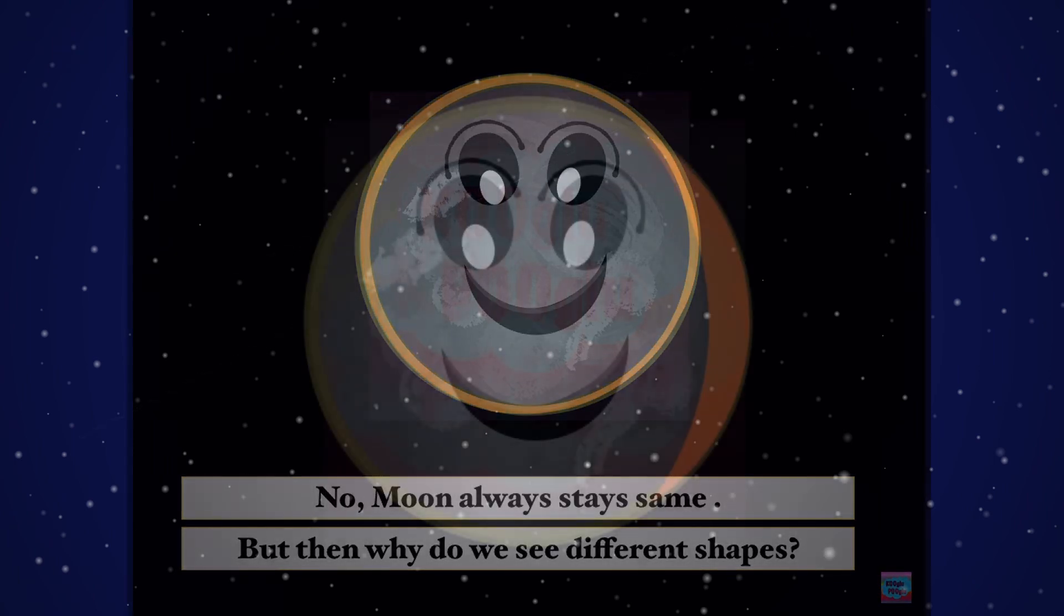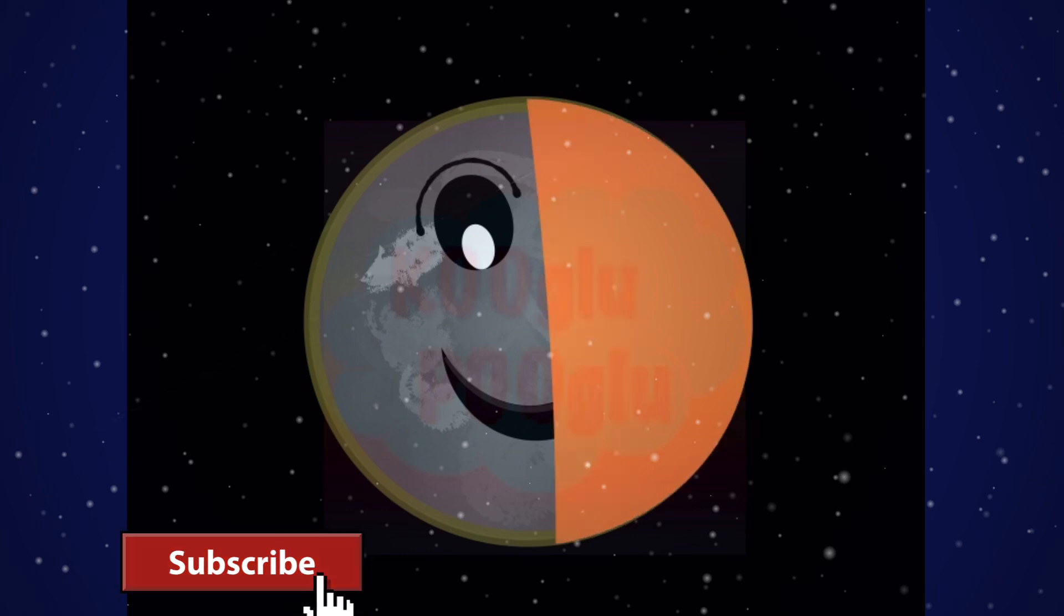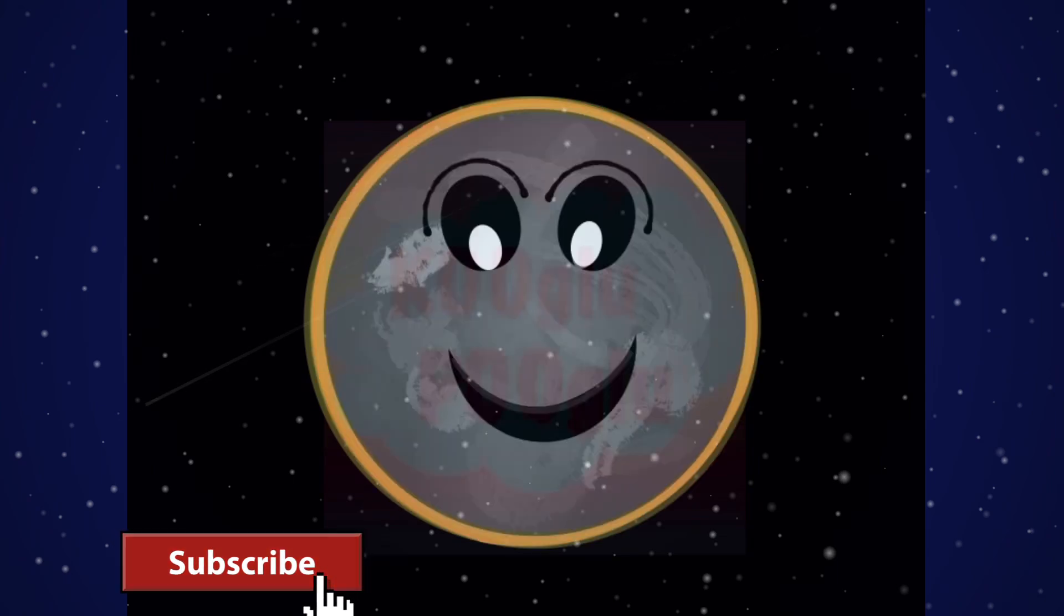The Moon doesn't emit any light by itself; rather, it reflects the Sun's light. The Sun lights up different parts of the Moon when it orbits the Earth. For humans, it appears that the Moon is changing its shape, but in reality it's the human's view that is altering, not the Moon's shape.